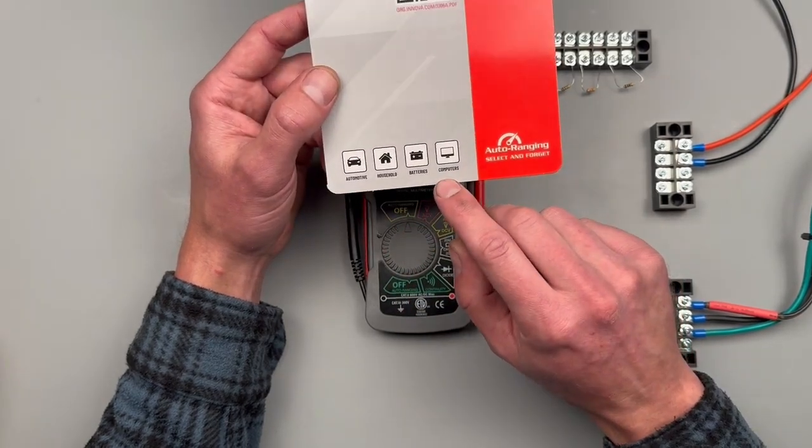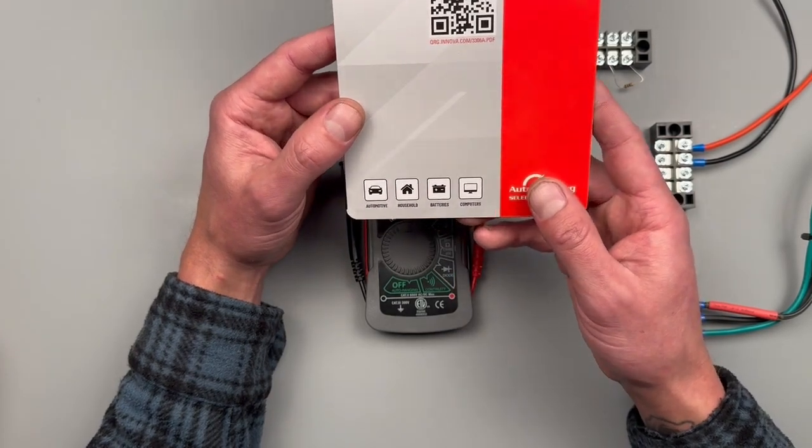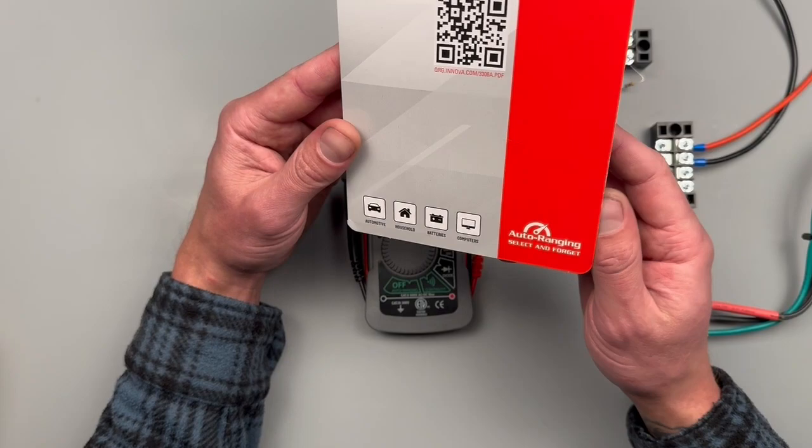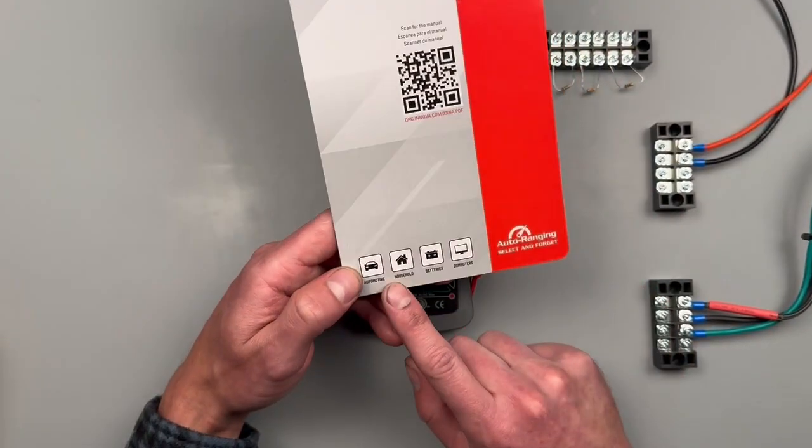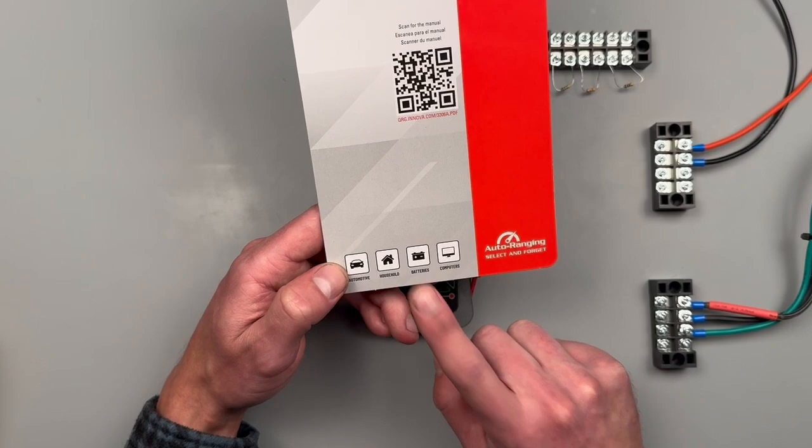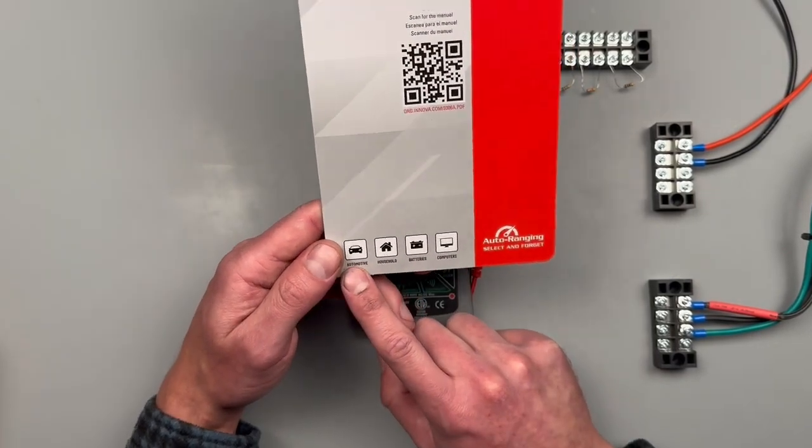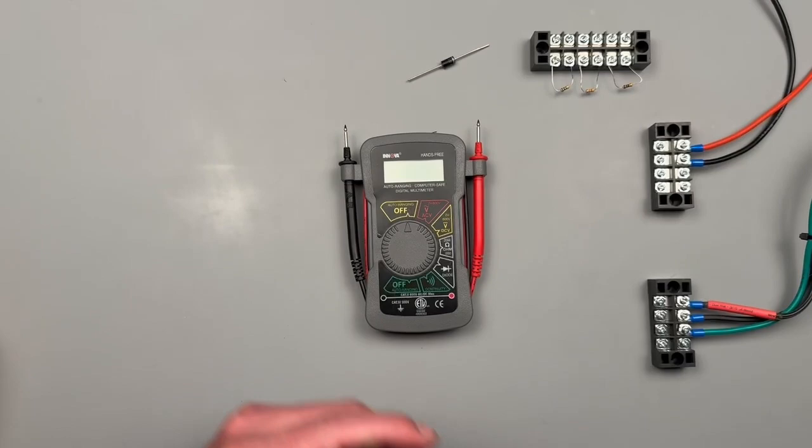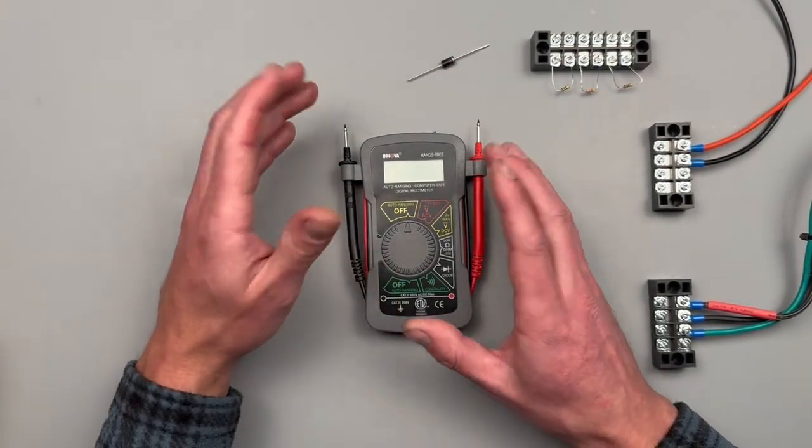It advertises that it's suitable for computer applications. I'm assuming they mean micro electronics. We're going to put that through its paces. Household computers is up in the air, batteries yeah that's not a big deal. Analog automotive circuitry I think is going to be the best suit for this meter.